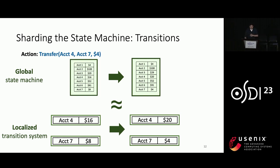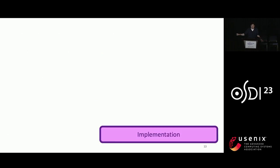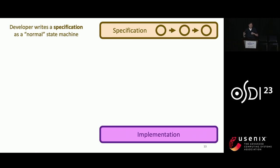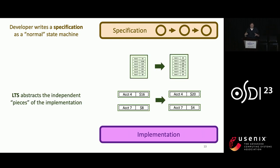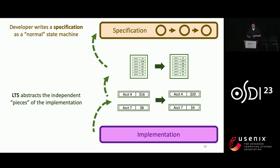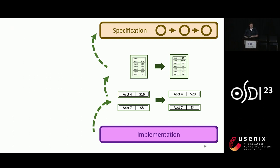With this concept in hand, I can now put together a more complete picture of how IronSync works. At the top level, our goal is to take the implementation and prove that it obeys some kind of specification, which is given as a normal state machine. To bridge between the implementation and the specification, we create an abstraction as a localized transition system. We show that the implementation obeys the local transitions, the local transitions obey the global view, and the global view obeys the specification. I'll quickly tell you how each of these three links works.